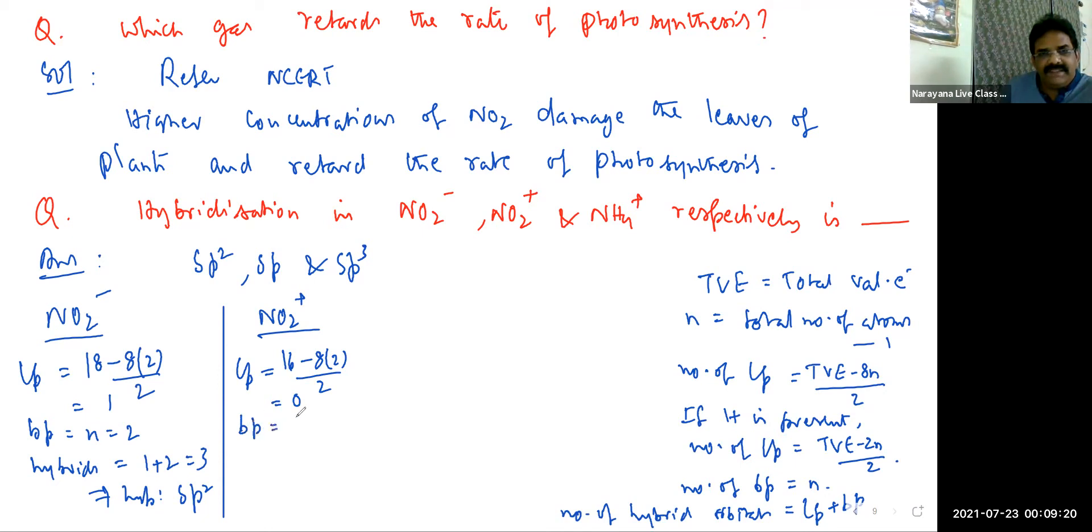So number of lone pairs is 0. Number of bond pairs is N value, that is 3 minus 1, 2. Therefore, number of hybrids: 0 plus 2, which is equal to 2. That implies it is SP hybridization. So that's over.